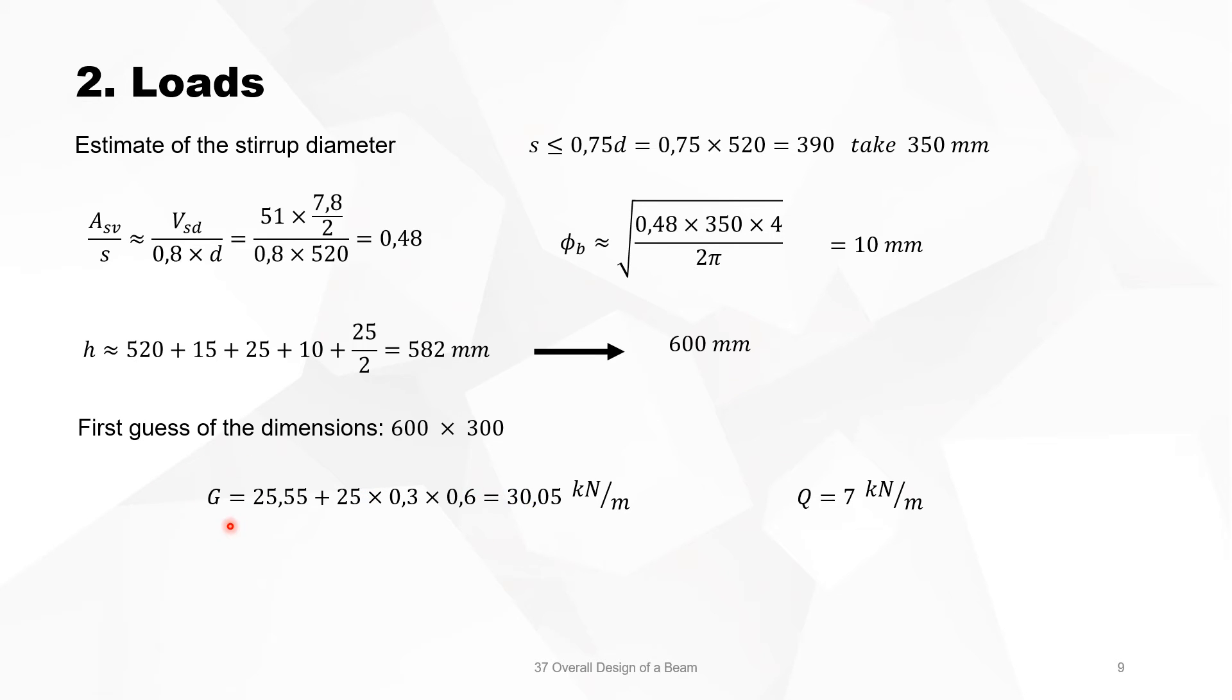The permanent load is then 30 kN per meter, the mobile load 7 kN per meter. In ULS, the mobile load times 1.5 and the permanent load times 1.35 gives me 51.07 kN per meter, and the maximum bending moment is 388 kN meter.